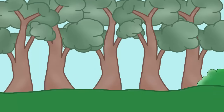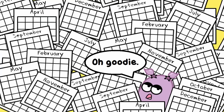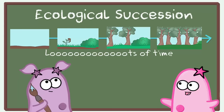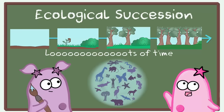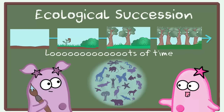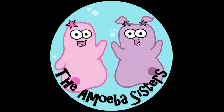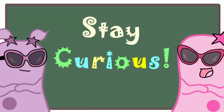Since secondary succession involves soil already being available, it's much more likely to be a faster process than primary succession. An important thing to remember about ecological succession is that it really shows diversity of organisms in an ecological community over a period of time — and usually it's a long period of time. Ecological succession over time can support an ecological community that continues to increase in biodiversity, and biodiversity is a beautiful thing. Check out our Food Web video for a little more about biodiversity. That's it for the Amoeba Sisters, and we remind you to stay curious. Have a nice day.